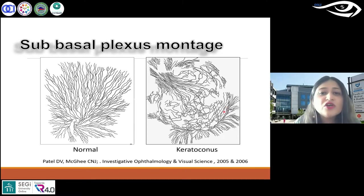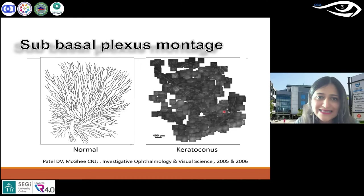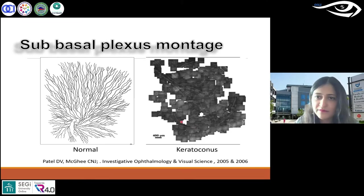When you do the maps, those are the tracings and these are the actual maps. If you look at these nerves, they are sitting right at the base of the cone.